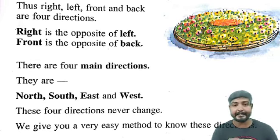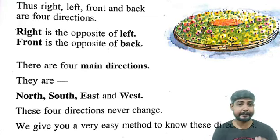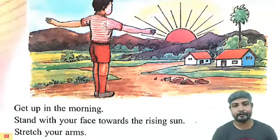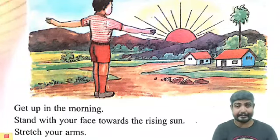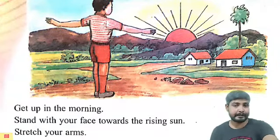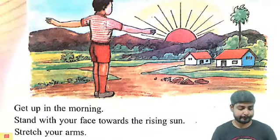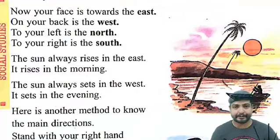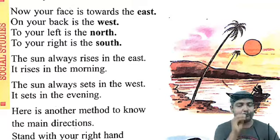We will give you a very easy method to know the directions. Get up in the morning and stand with your face towards the rising sun. Stretch your arms. Now your face is towards the East — the direction from which the sun rises is East.